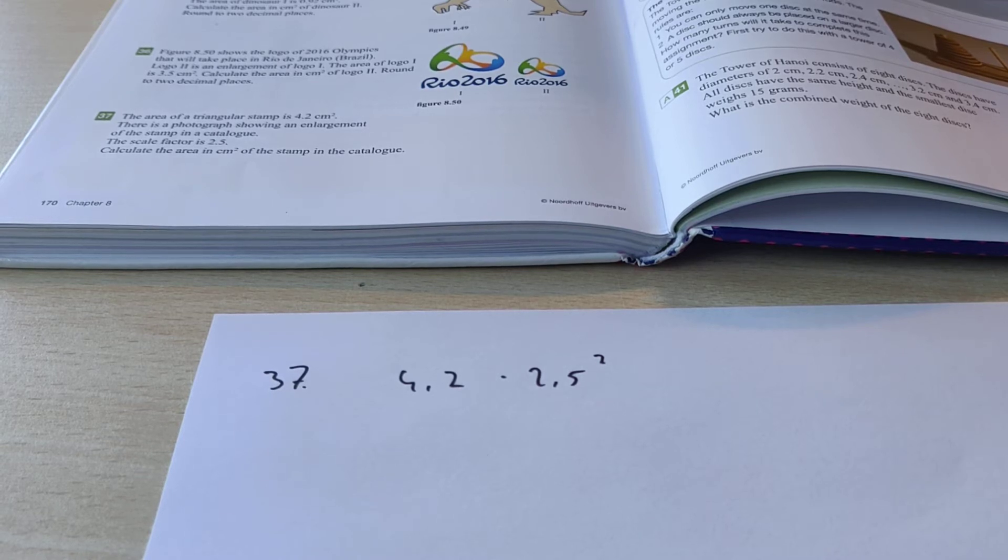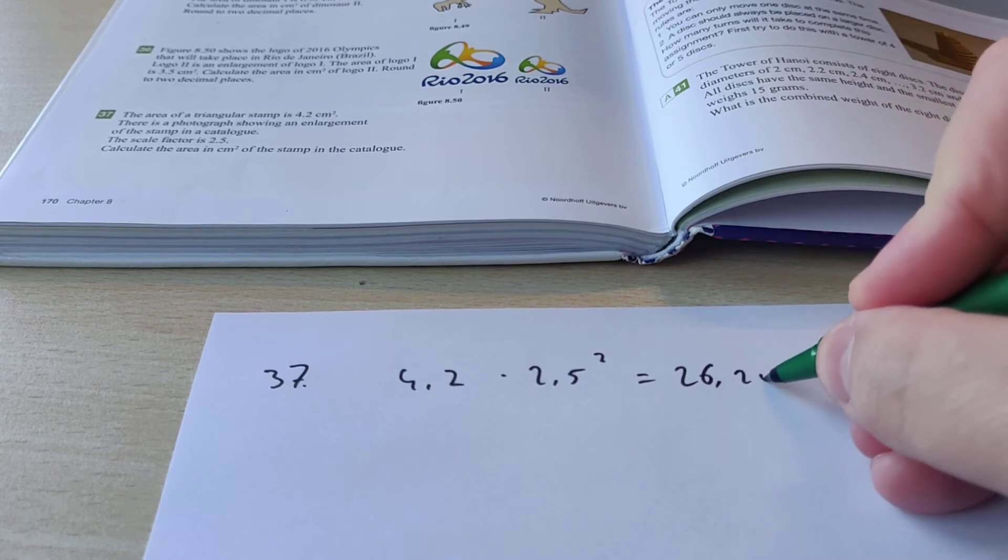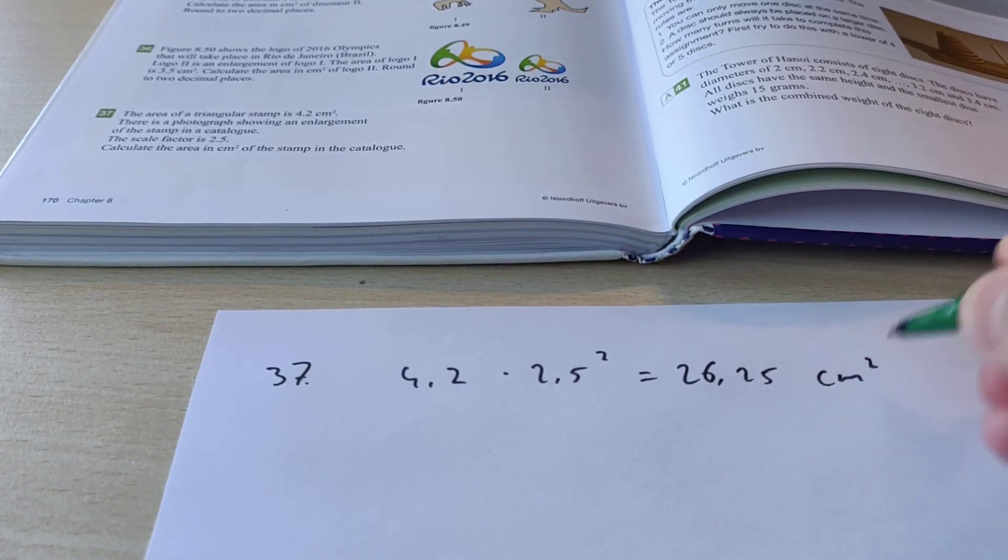So let's see what we get, times 2.5 squared, that is 26.25 square centimeters. And that's it.